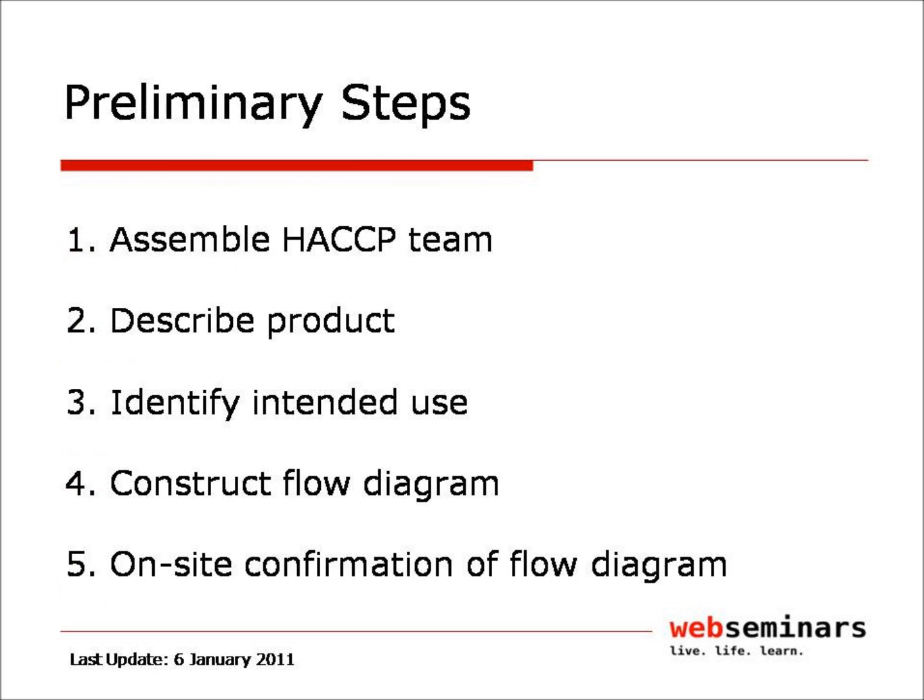The first part of developing a HACCP plan is to undertake the five preliminary steps. The preliminary steps are intended to help you gather and collate background information that will help with implementation of the seven principles of HACCP. The five preliminary steps are: 1. Assemble the HACCP team; 2. Describe the product; 3. Identify the intended use of the product; 4. Construct a process flow diagram of the product; 5. Perform an on-site confirmation of the process flow diagram.